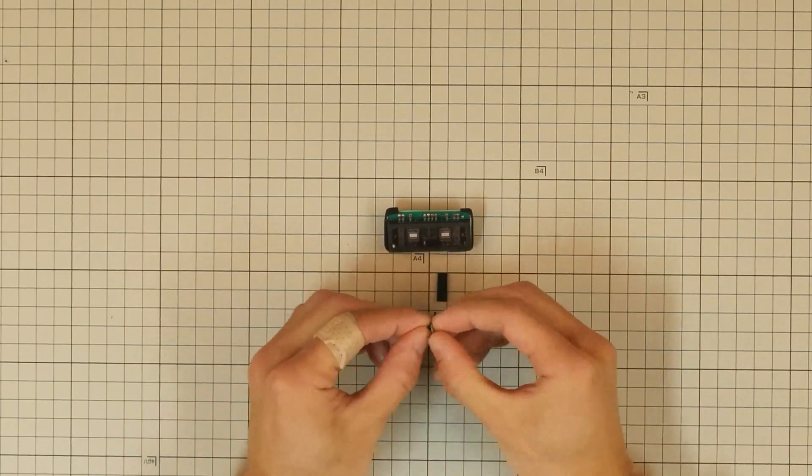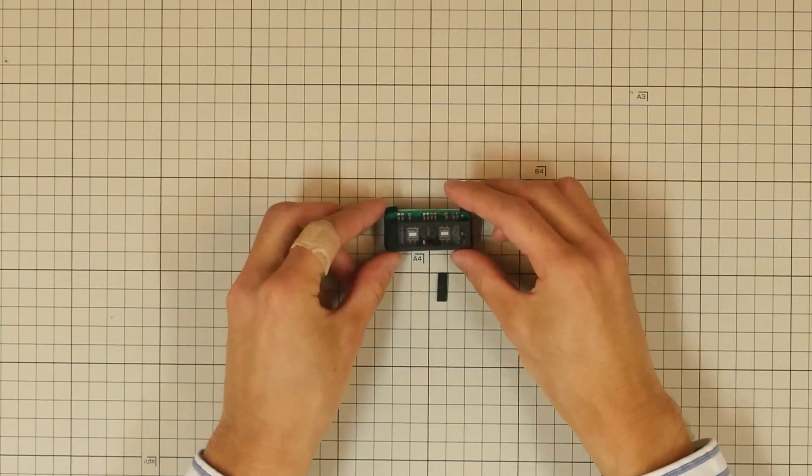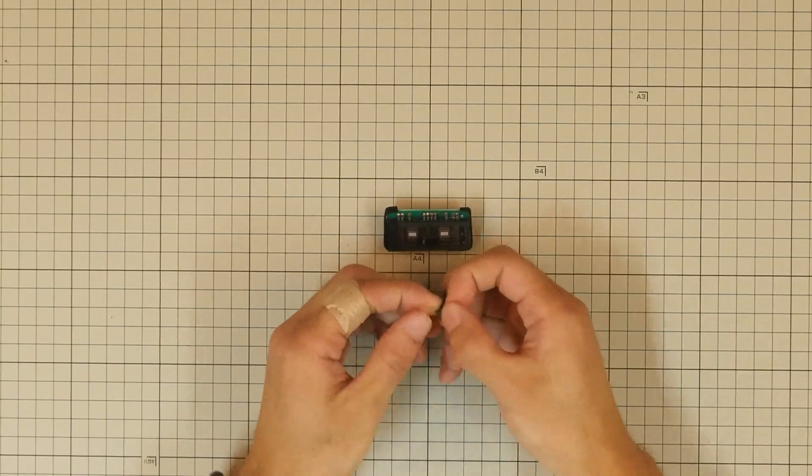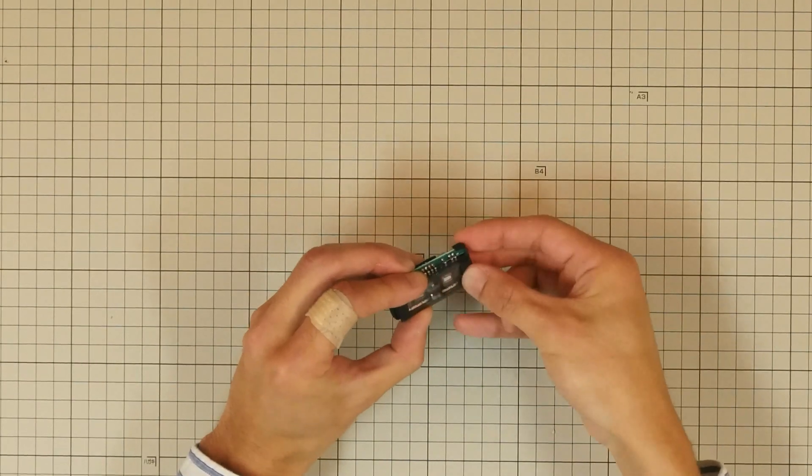Then, take the two short black cushions and attach them to the NewTube. Make sure not to cover the connector with the cushion.